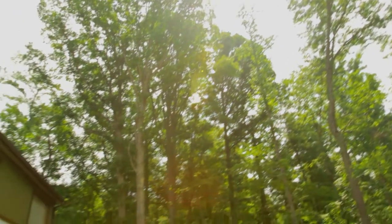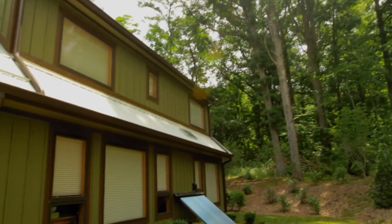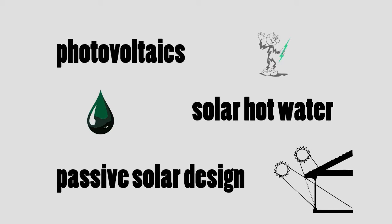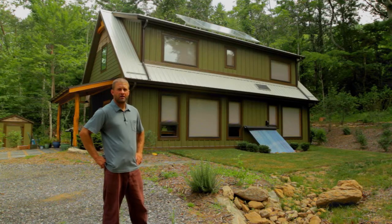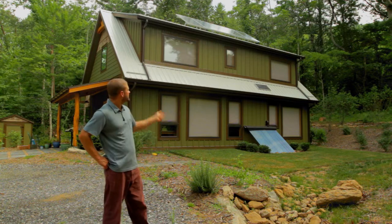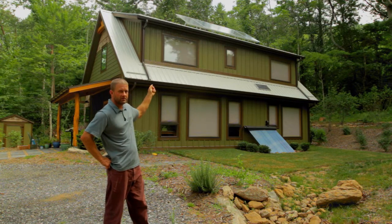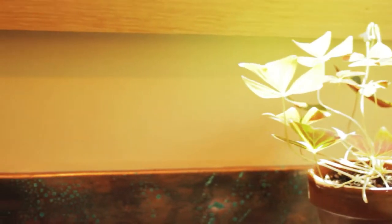There are three main ways of using solar energy in our homes and buildings today. At this home, we've got all three forms of solar energy in play. As you can see on the roof, we have the photovoltaics. They're producing electricity for the home and for the neighbors during peak demand hours.